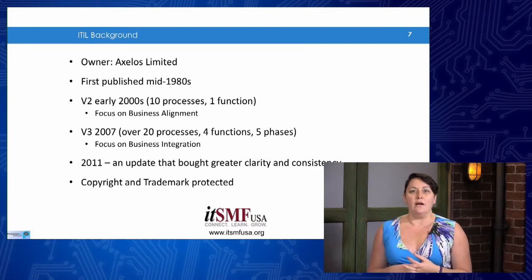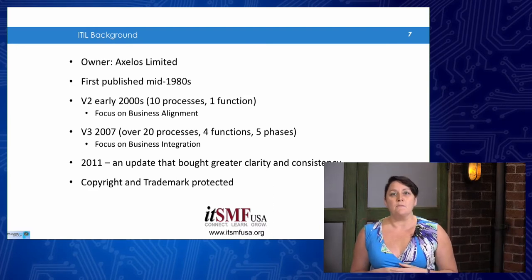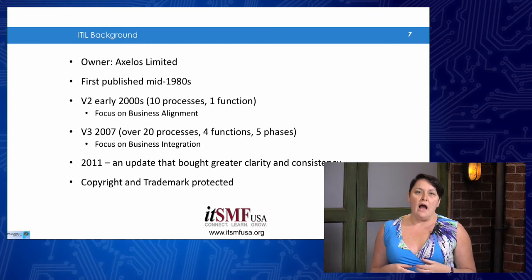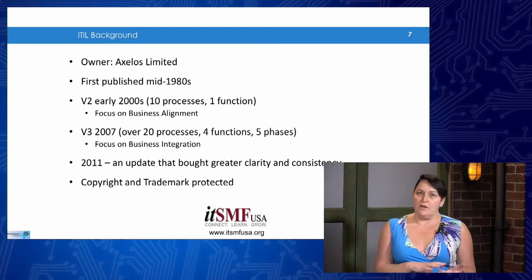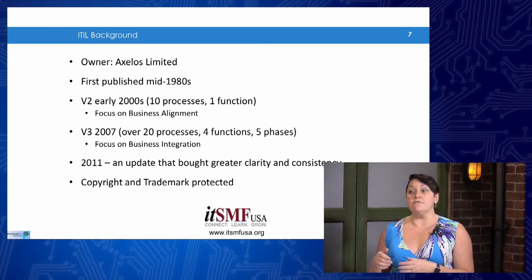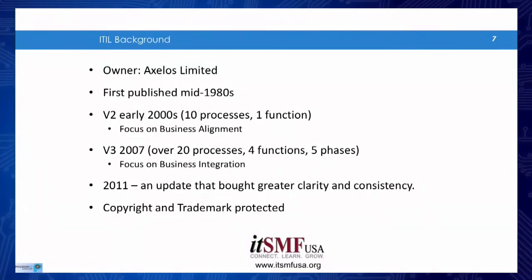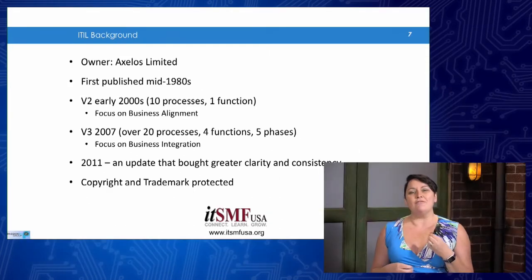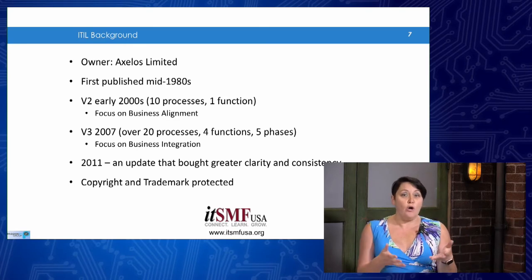So where does ITIL come from? It's actually owned by a company called Axelos and it was first published in the mid-1980s by the UK government. The Office of Government Commerce owned ITIL for a very long time. We developed ITIL right the way back from the 1980s through its version 2 in the mid-1990s, to version 3 which was released in 2007, and then there was an update to version 3 in 2011, which is exactly where we are right now. It is copyrighted, trademark protected, and is a framework for managing services.